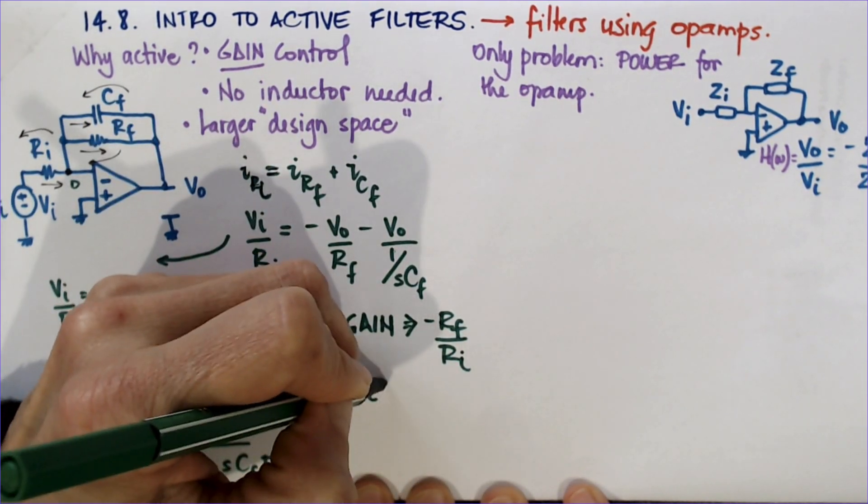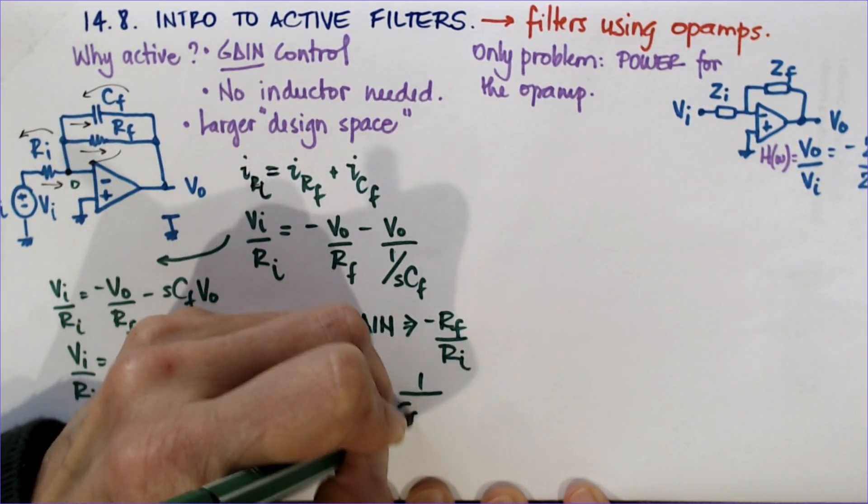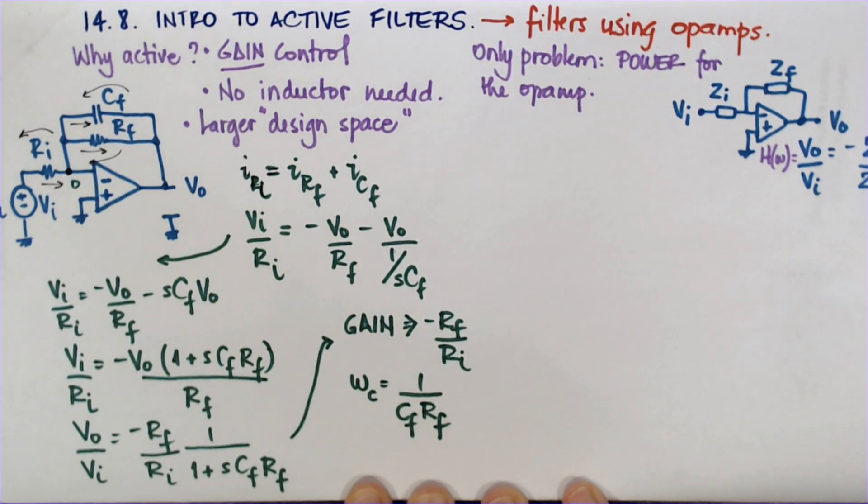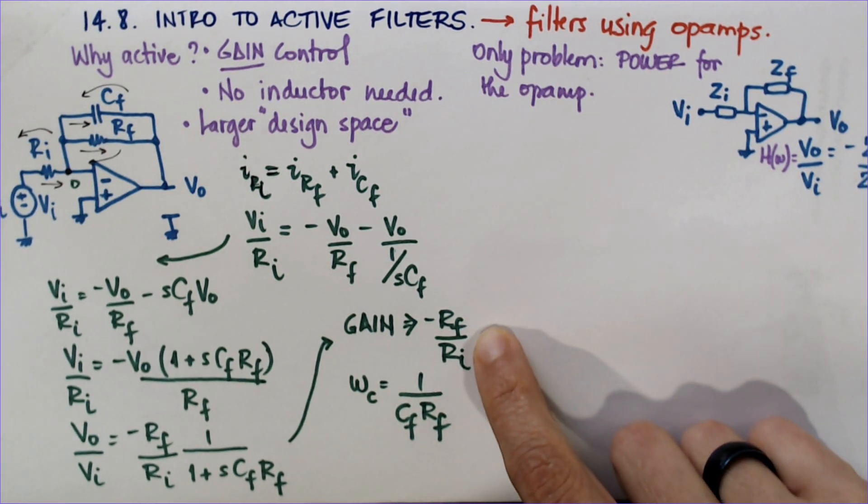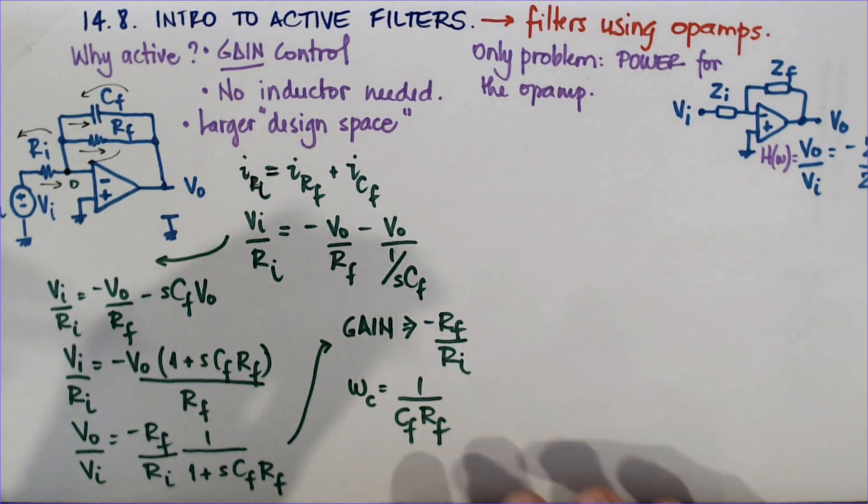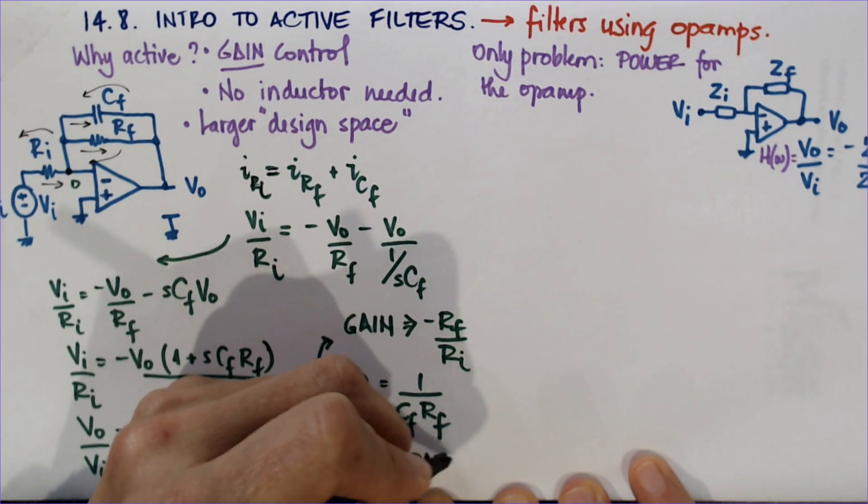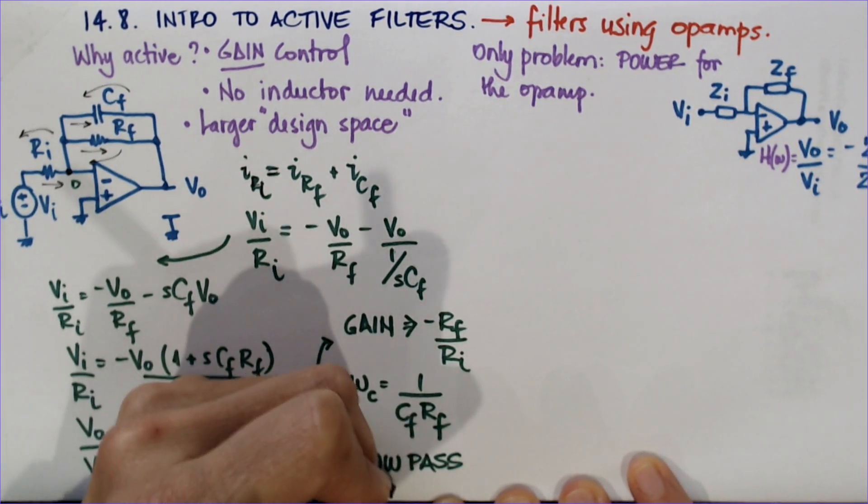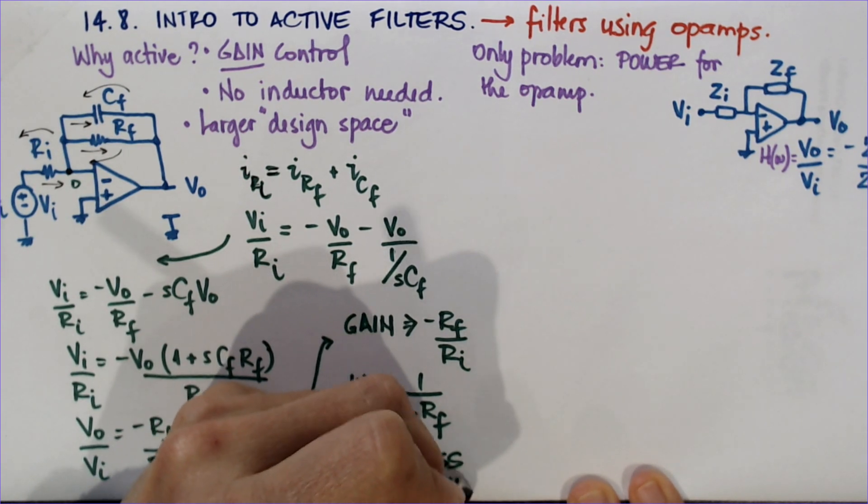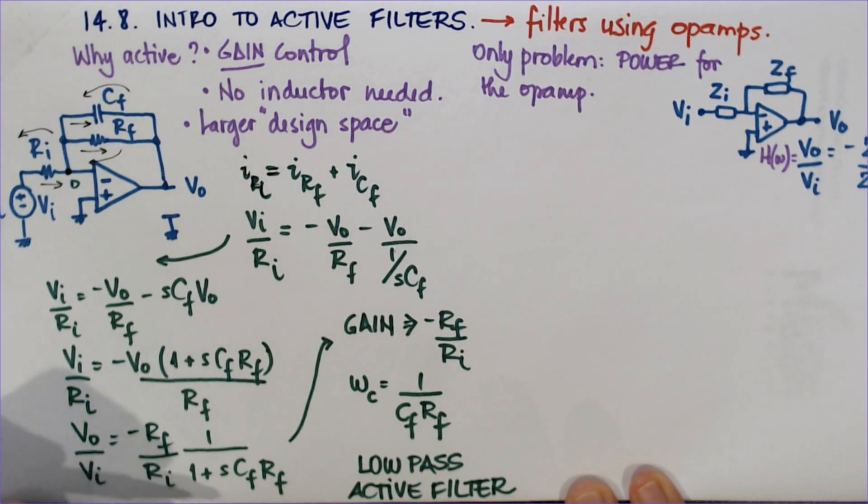Minus RF over RI times 1 over 1 plus SCF RF. And this shows that the gain for the passing frequencies here is the minus RF over RI. But the cutoff frequency is the same as what we had looked at before. Basically the feedback resistor with the capacitor define which frequency this low-pass filter cuts off at. But then I can still put a gain on it that's only dependent on RF over RI. So this is a low-pass active filter.